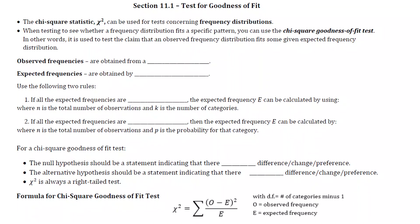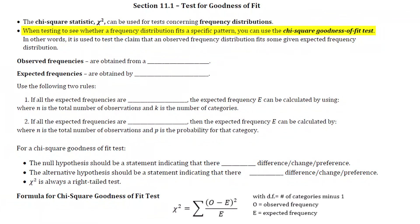Today we're going to look at section 11.1 and learn a couple of different hypothesis tests for frequency distributions. The statistic we use for frequency distribution testing is called the chi-square statistic, and when we're testing to see whether a frequency distribution fits a specific pattern, we use a test called the chi-square goodness of fit test. We'll be testing whether an observed frequency distribution fits some given expected frequency distribution.